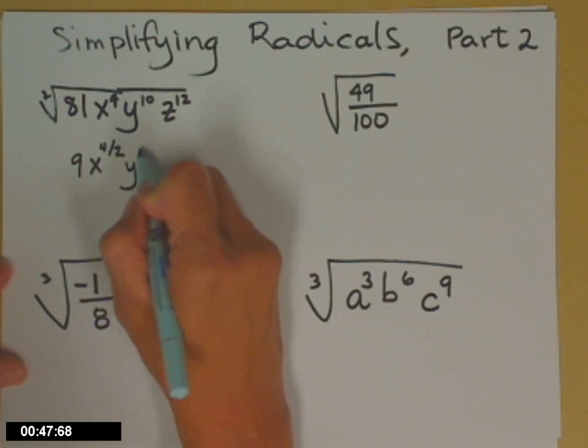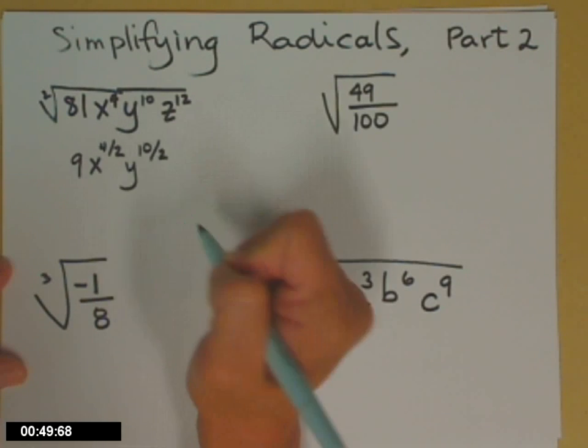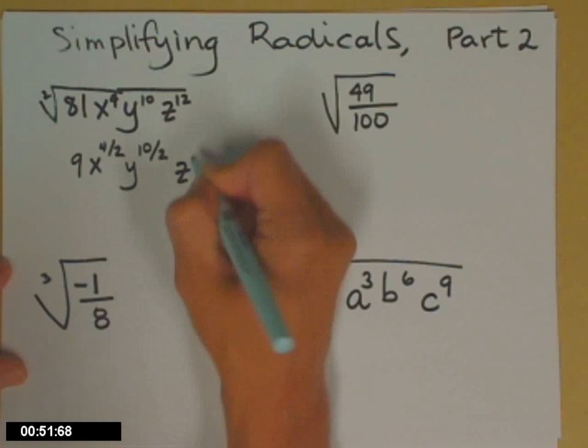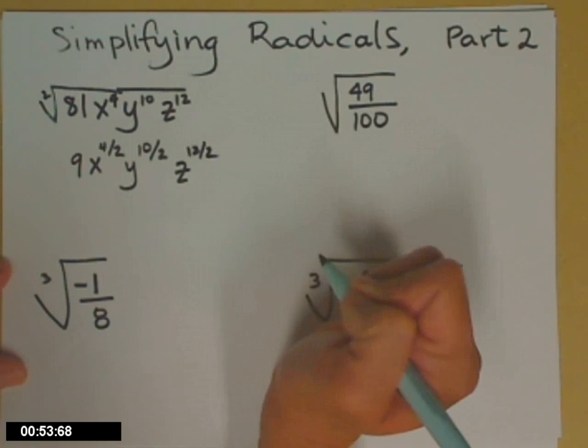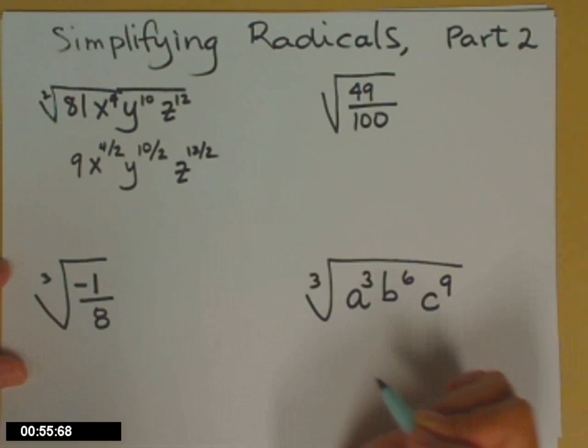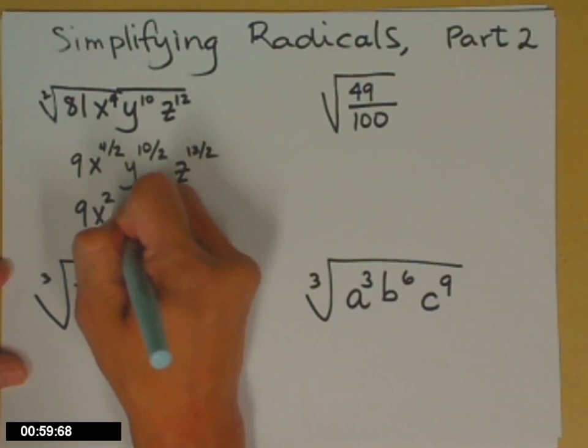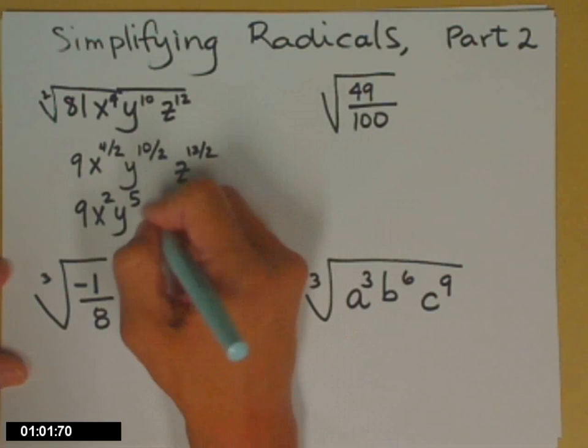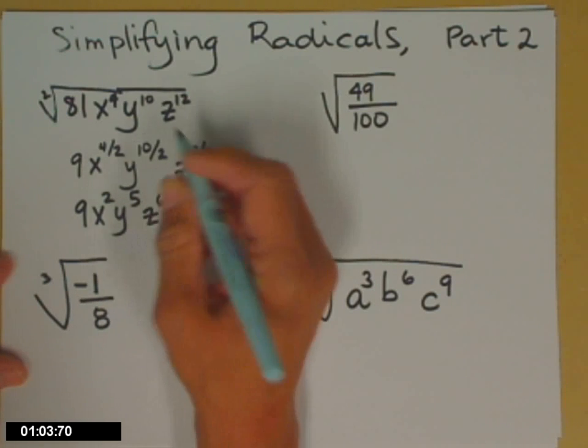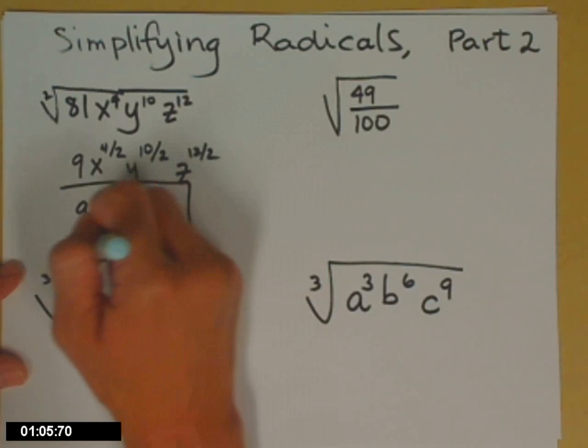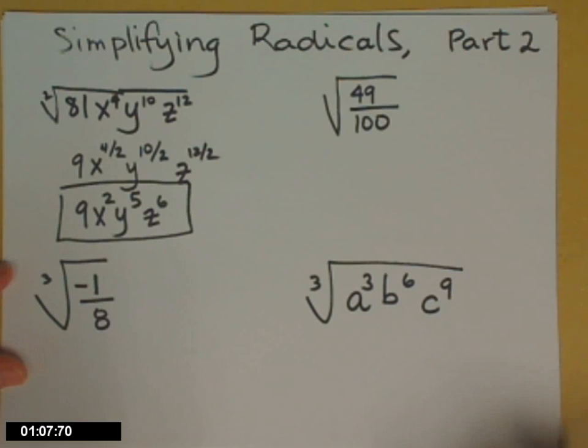Same thing on that next one. y to the ten over two, z to the twelve over two. And then if you tidy those exponents, we'll get 9x squared, y to the fifth, z to the sixth. And that's how that simplifies.